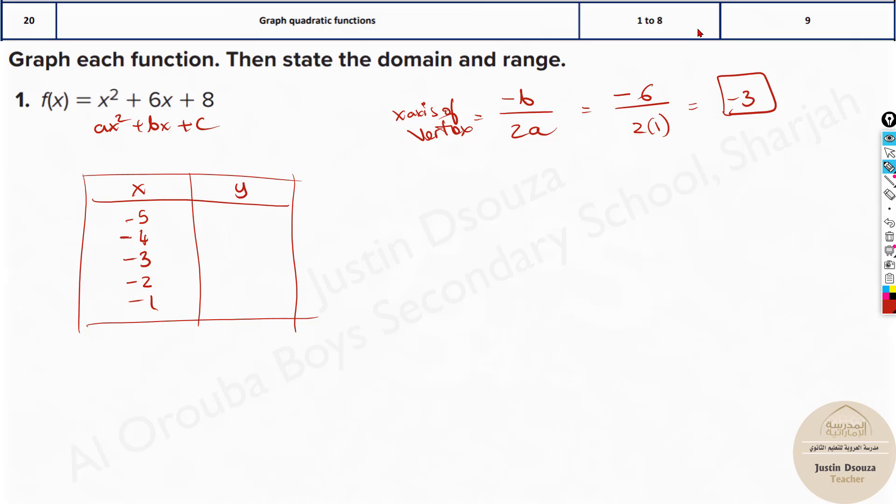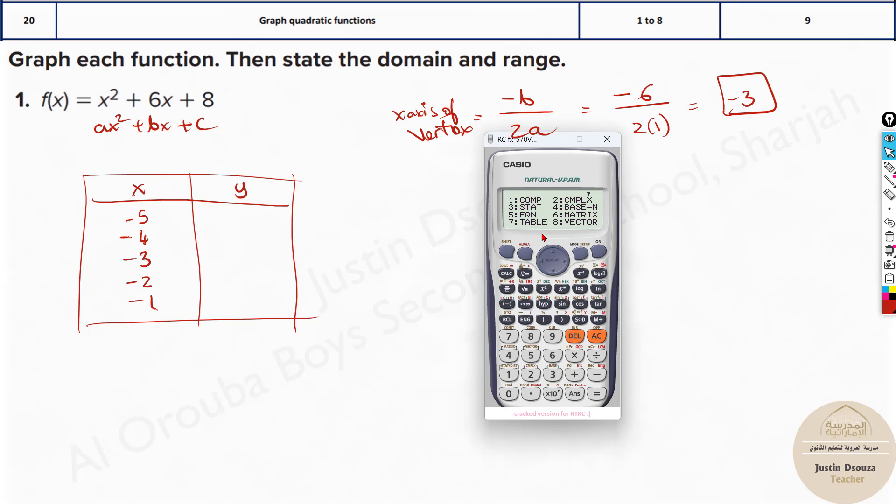So all of you take your calculators and we click on the mode and we get so many options. Let's click on the mode 7, that is the table option. Now press this equation. Type this equation out: alpha x² + 6 alpha x + 8. To get this x you need to press alpha and the closing brackets. Now you need to press equal to. If you have the latest model of the calculator you will get this option. Just press equal to again. Don't press anything, you're just one equation. Otherwise, once you type the equation, when you press equal to you will get this start option. Now where do you want to start is this starting x value, the lowest number of x. That is -5, the least value. And where do you want to end? At -1.